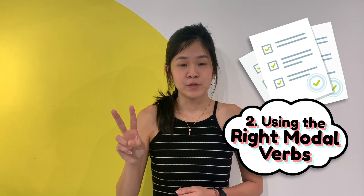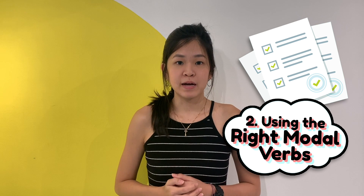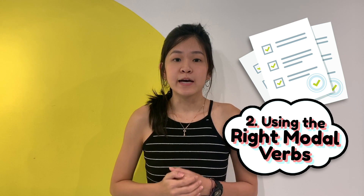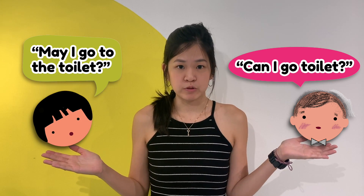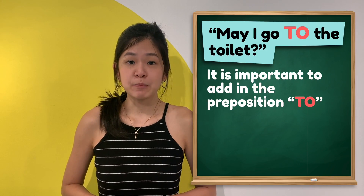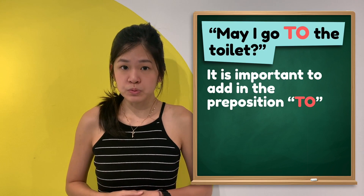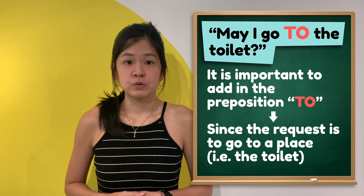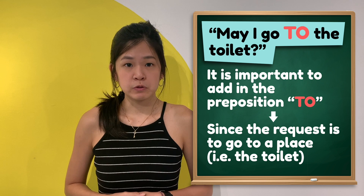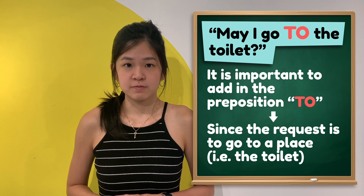Number 2: Using the right modal verbs. Now compare these two sentences. 'Can I go to the toilet?' versus 'May I go to the toilet?' First and foremost, it is important to add in the preposition 'to' as you are requesting to go to a place, which is the toilet.